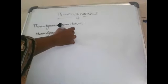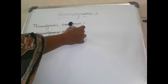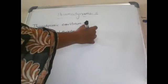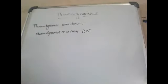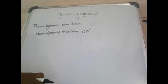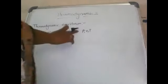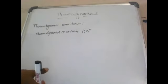The thermodynamical coordinates are pressure, volume, and temperature. A thermodynamic system is one which can be described in terms of these thermodynamic coordinates. When the thermodynamic variables attain a steady value and are independent of time, the system is said to be in the state of thermodynamic equilibrium.